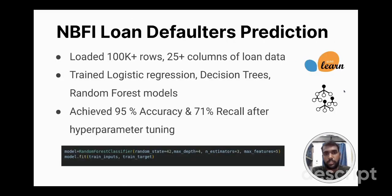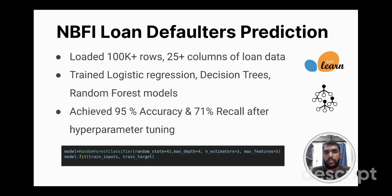My next project revolves around machine learning — predicting loan defaults using the NBFI loan dataset from Kaggle. This dataset contains around 100,000 rows and 25 columns. The data was first cleaned and pre-processed. Various machine learning models were developed such as decision trees, logistic regression, and random forest, and were evaluated using recall score as the evaluation metric. After hyperparameter tuning, the random forest achieved the highest accuracy of around 95% and a 71% recall score.